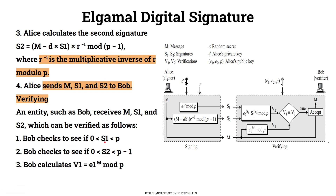Bob checks to see if S1 is between 0 and P, using P as the public value. He also checks that S2 is between 0 and P-1. These are the first and second checks. In the third check, Bob computes the value V1.